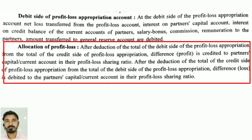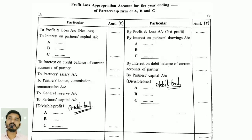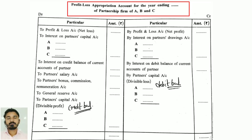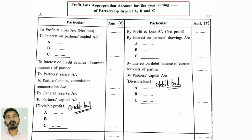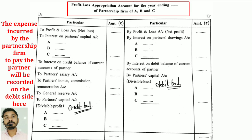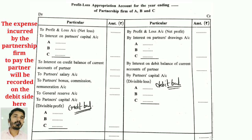Next, the specimen: Profit and Loss Appropriation Account for the year ending — partnership firm of A, B, and C, three partners. The left side is debit and the right side is credit. Left side shows particulars and amount; right side also shows particulars and amount. You have to prepare the specimen.